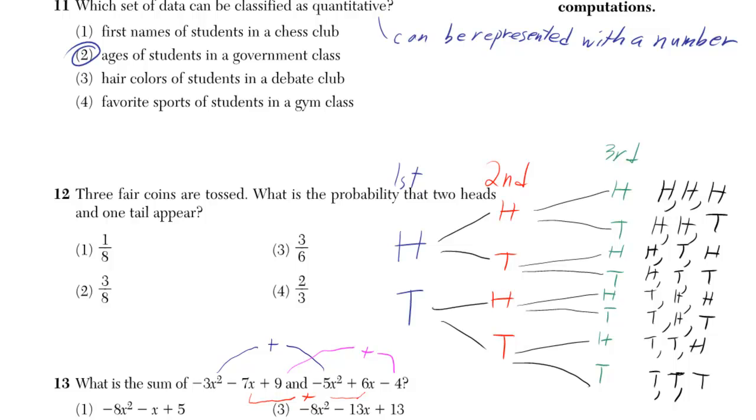Favorite sports of students in a gym class. Not many people are playing the sport 2 or 25. It doesn't make any sense. It can't be represented with a number.